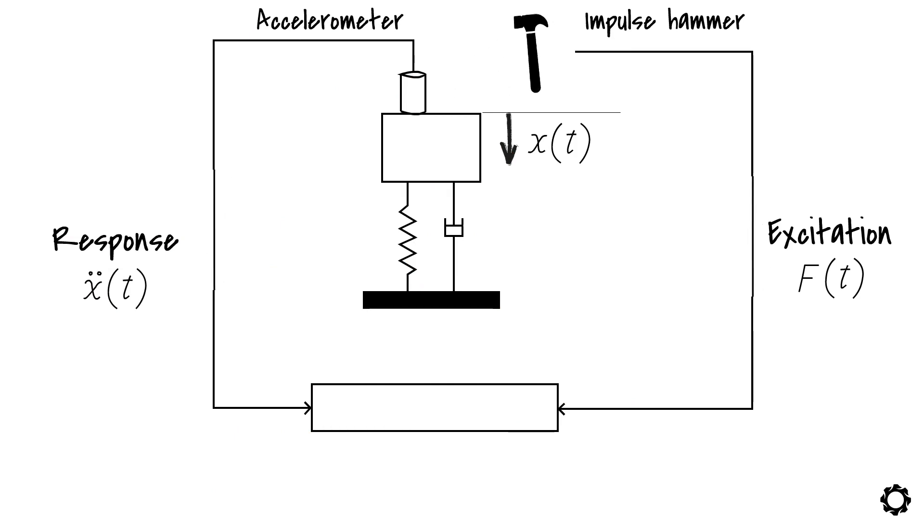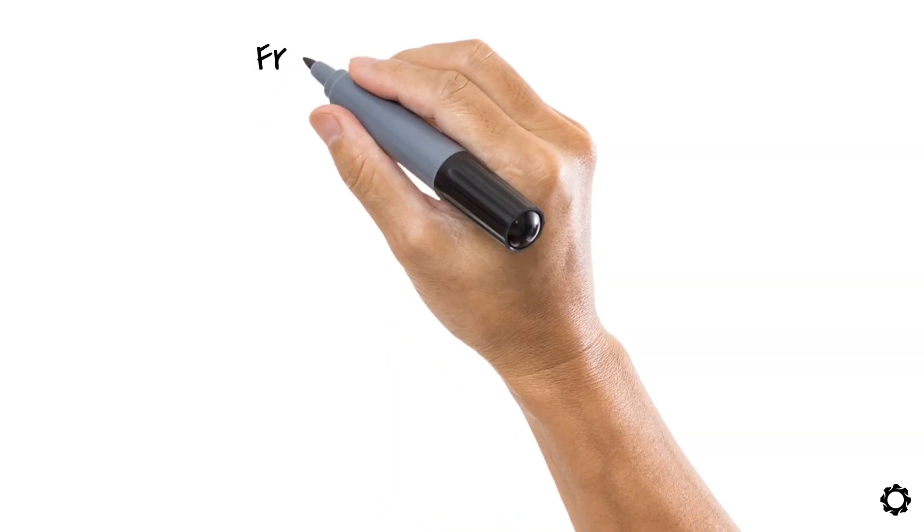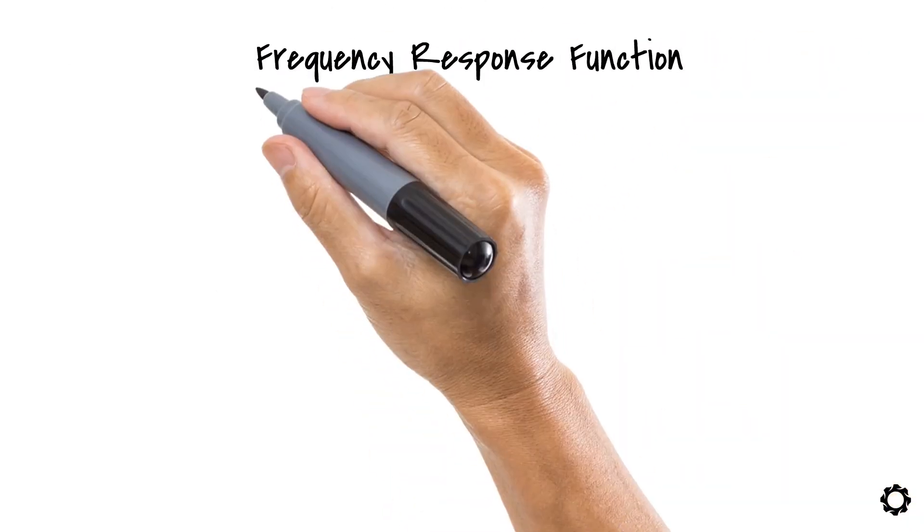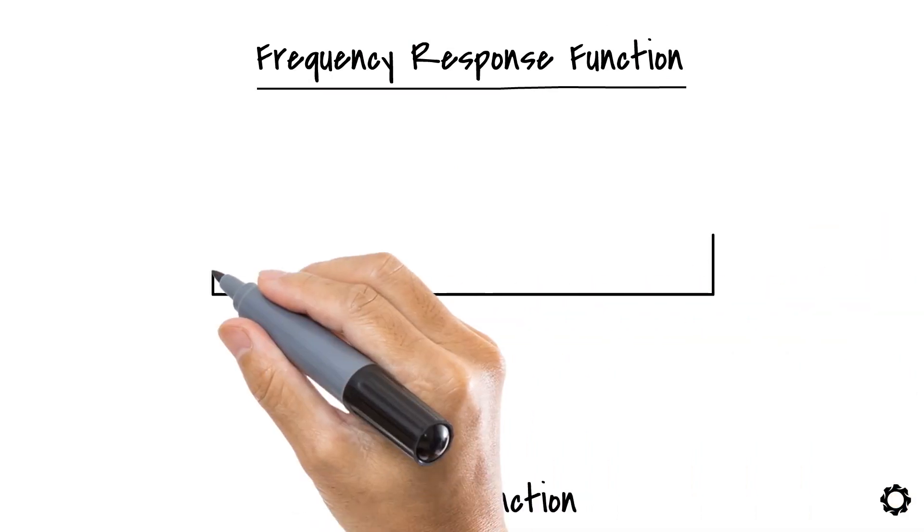Both signals acceleration and excitation force will go to a signal analyzer which in turn will generate something called a frequency response function. Well what is that? Theoretically the frequency response function is explained with the help of something called transfer function from the control engineering field.